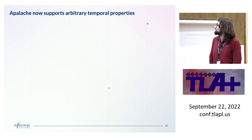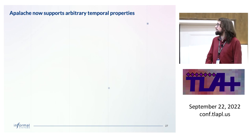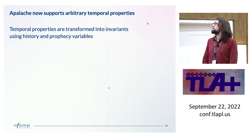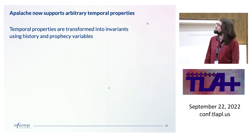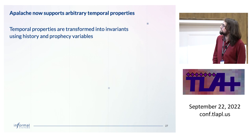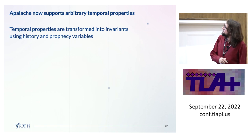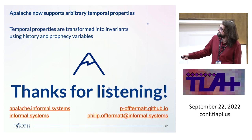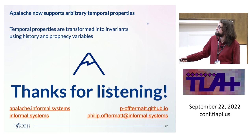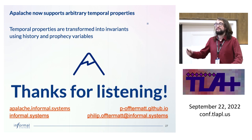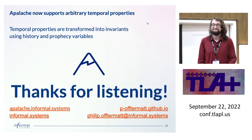To conclude, Apalache now supports arbitrary temporal properties. Temporal properties are transformed into invariants in an intermediate specification, thanks mostly to history and prophecy variables — which may also be useful for other complex things you want to do with TLA+. You can find Apalache on the Informal Systems page, and feel free to contact me.